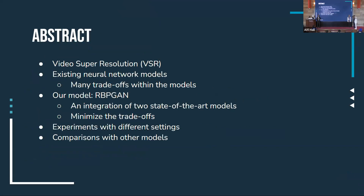Let us begin by describing what we've been doing through the last two semesters. We've been studying video super resolution, which is the process of enhancing the quality of videos. At the moment there are many neural network models for VSR; however there exist many trade-offs between these models. So we proposed a new model to minimize the trade-offs between the different existing models.